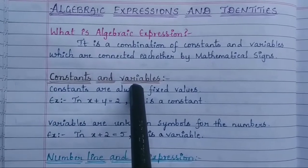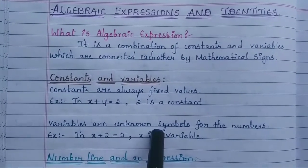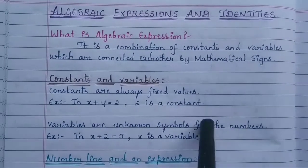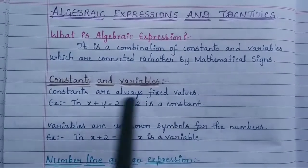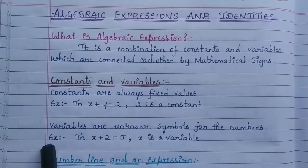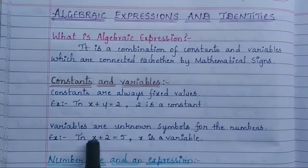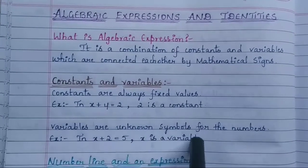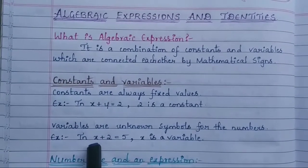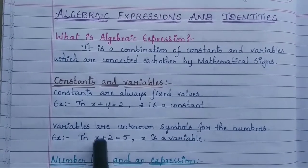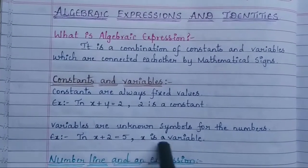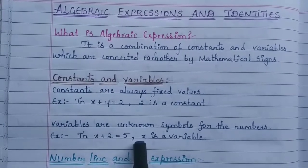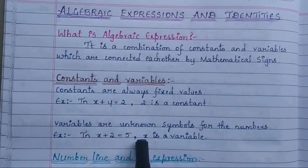Variables are unknown symbols for the numbers. Instead of numbers, wherever we write some unknown symbols, they are nothing but the variables. In the example x + 2 = 5, x is the variable — we don't know the value of x. Instead of a number, a letter is replaced, so that is a variable.